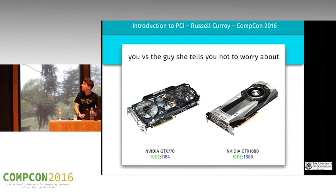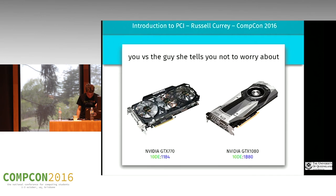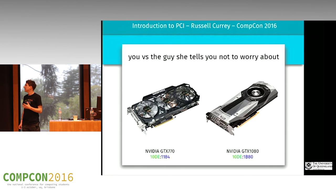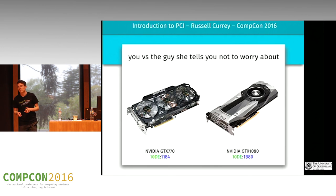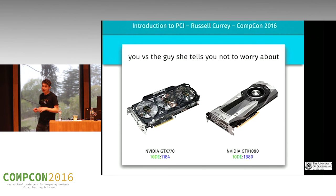A little bit more on the identifiers. On the left we have the graphics card I own, on the right the graphics card I want. The GTX 770 has an identifier of 10DE:1184 and the card on the right has 10DE:1B80. The left number is the same because it's the vendor ID — 10DE means NVIDIA. An NVIDIA driver will look for that when figuring out what device to touch. The number on the right is assigned to the individual device. This is how we figure out what device is what; the device gives you these values and it's up to firmware or the OS to figure out what to do.